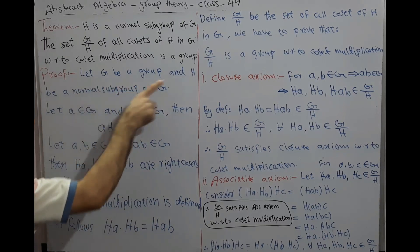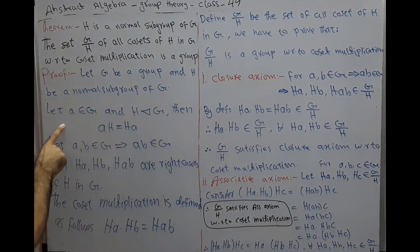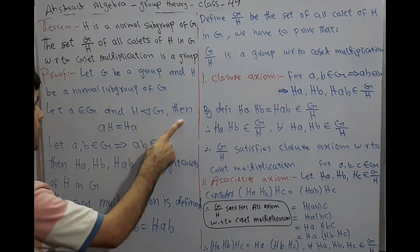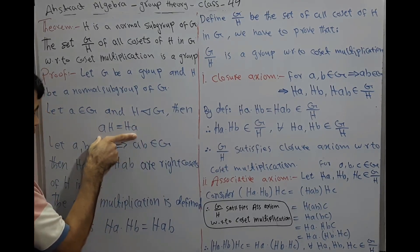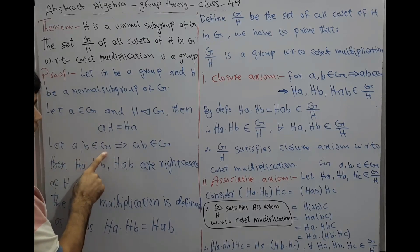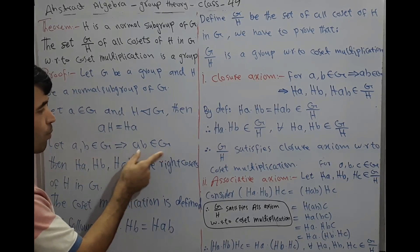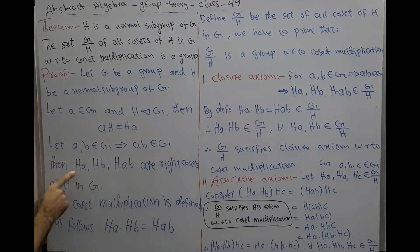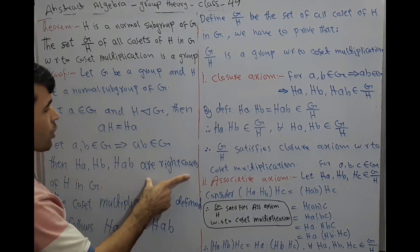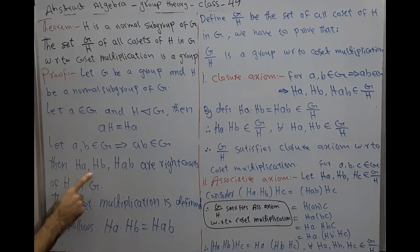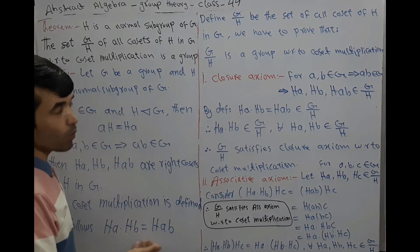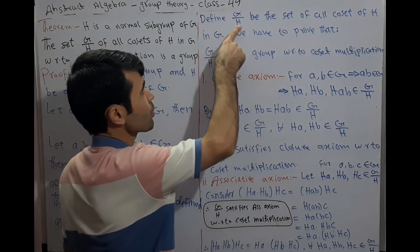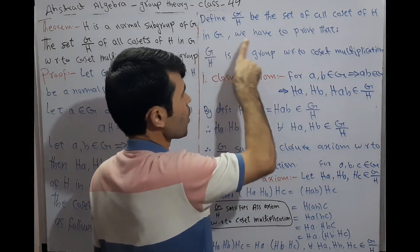Proof: Let G be a group and H be a normal subgroup of G. Let A belong to G. Since H is a normal subgroup, AH equals HA; the left coset equals the right coset. Let A, B belong to G, which implies AB also belongs to G since G is a group. HA, HB, and H(AB) are right cosets of H in G. Coset multiplication is defined as HA·HB = H(AB). Define G by H as the set of all cosets of H in G.